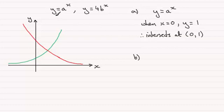Remember in part A we had to find out where the graph y equals a to the power x crosses the y axis. Now we're being asked where does the graph y equals 4b to the power x cross the y axis?